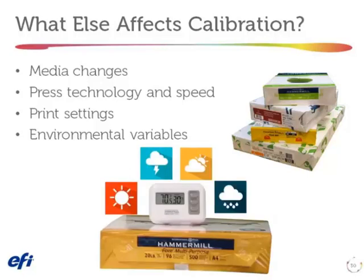The last variable is environmental. Temperature is a contributor, and humidity is a huge contributor. Even with conventional presses, after about the three-quarter tone, gray balance changes as humidity shifts in the press room. Digital devices are sensitive to humidity across an even broader part of the tonal scale. Unless you're in a humidity-controlled environment, as humidity changes you'll need to recalibrate, because the tonal characteristics of the digital press will vary.